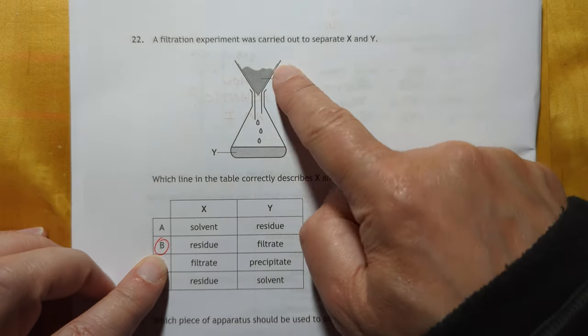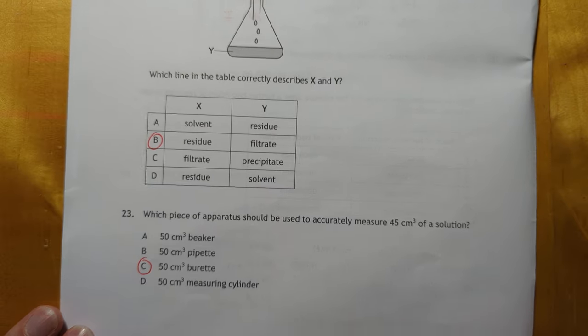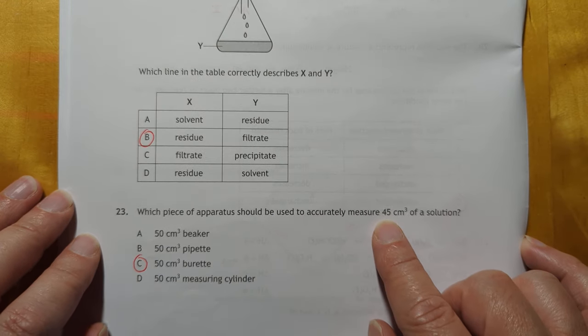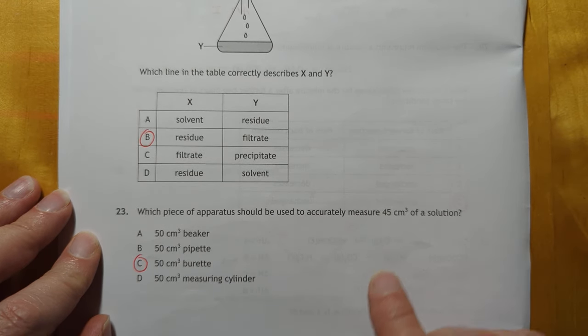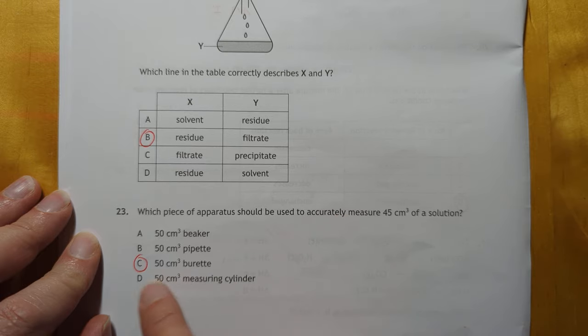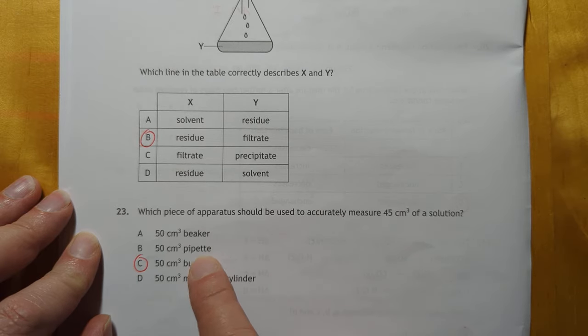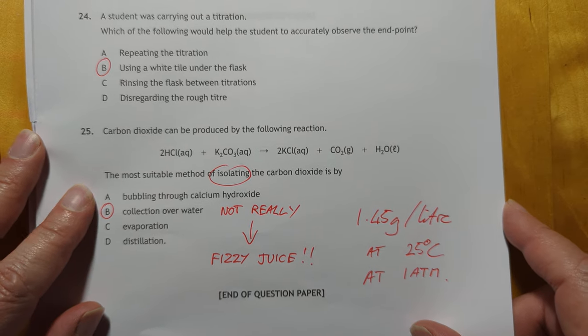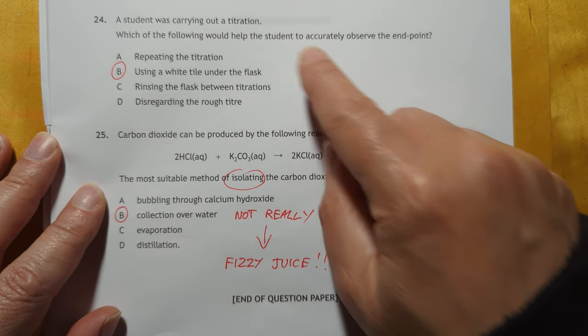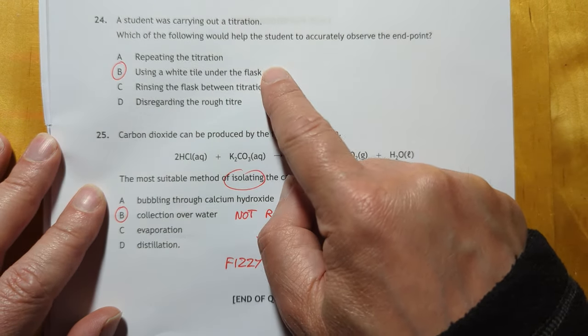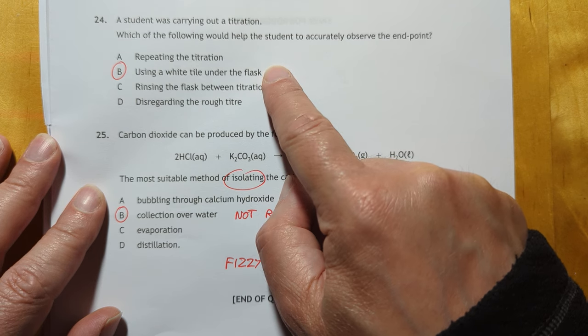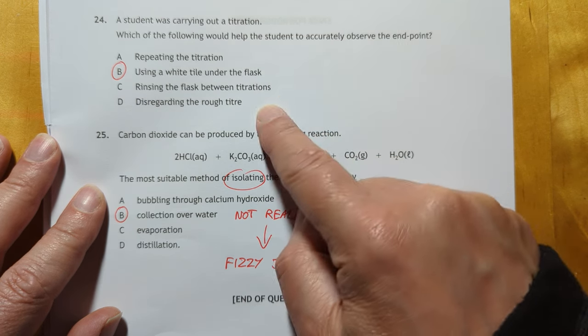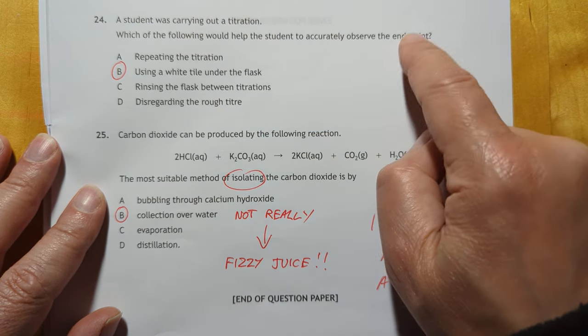This is a residue up here, and that's a filtrate. 45 mils of a solution cannot be measured accurately with anything else than a 50 mil burette, I'm afraid. Accurately observe the end point. That's the white tile, so you can see the colour change more clearly. Everything else does not help you actually measure the end point.